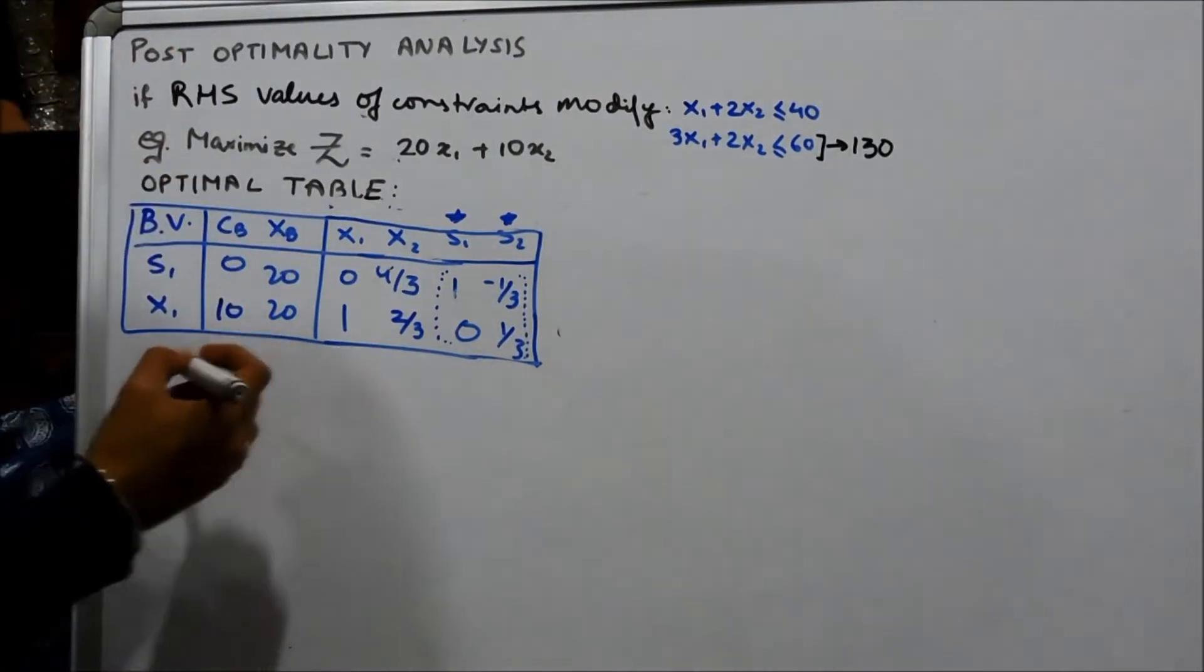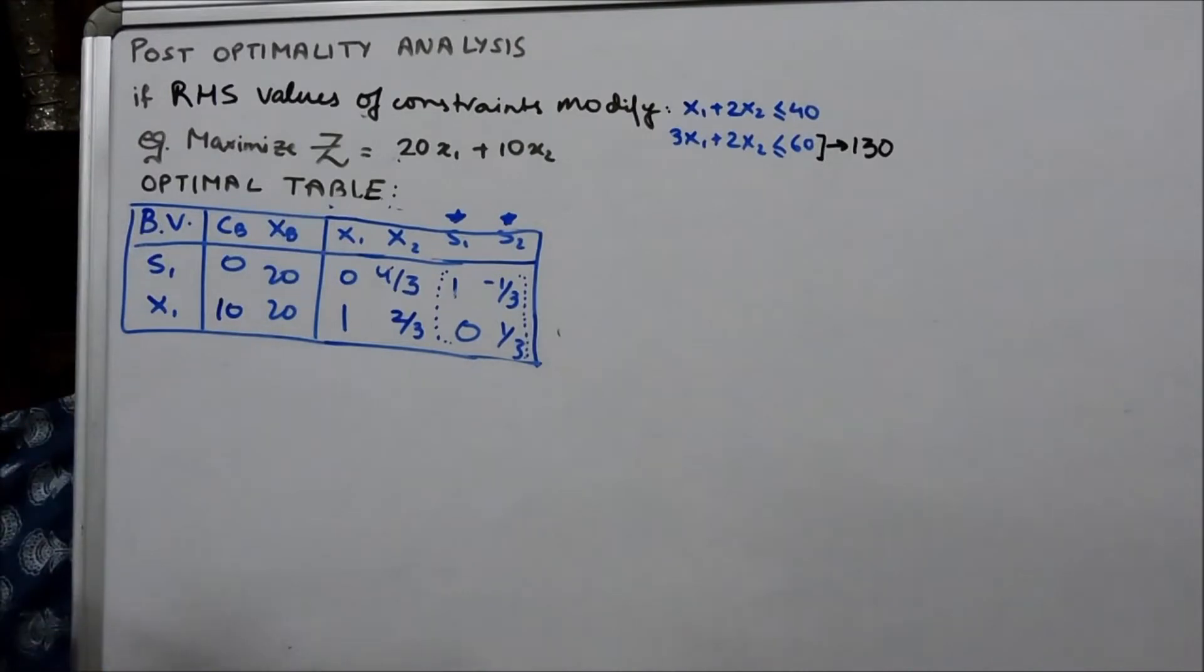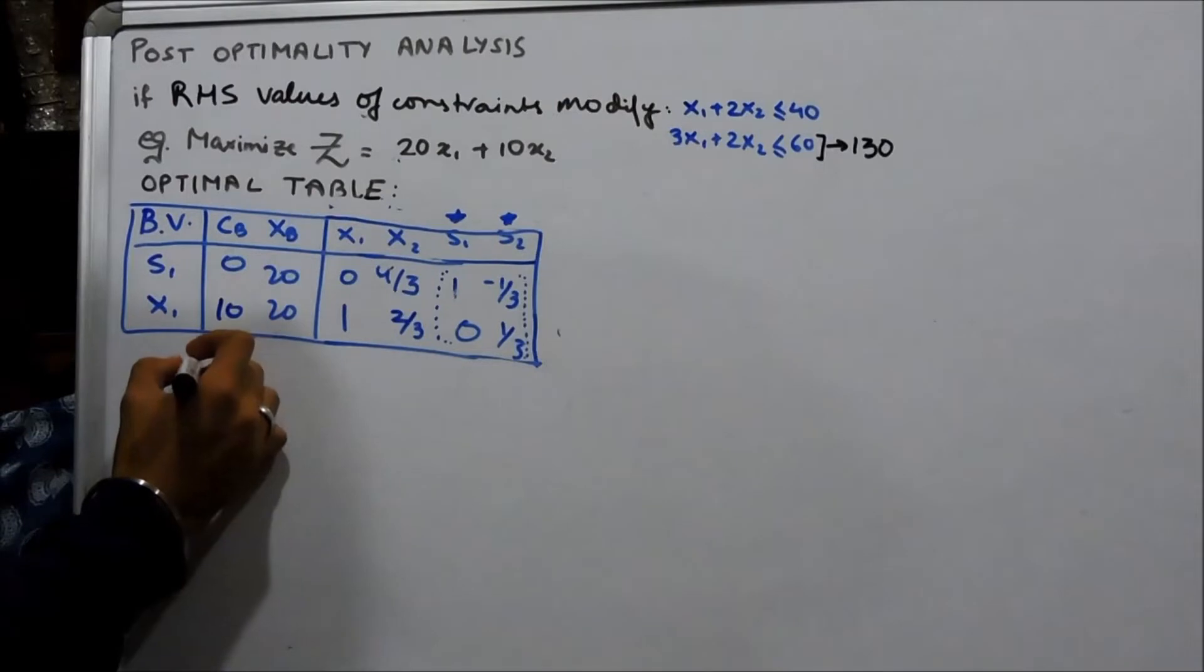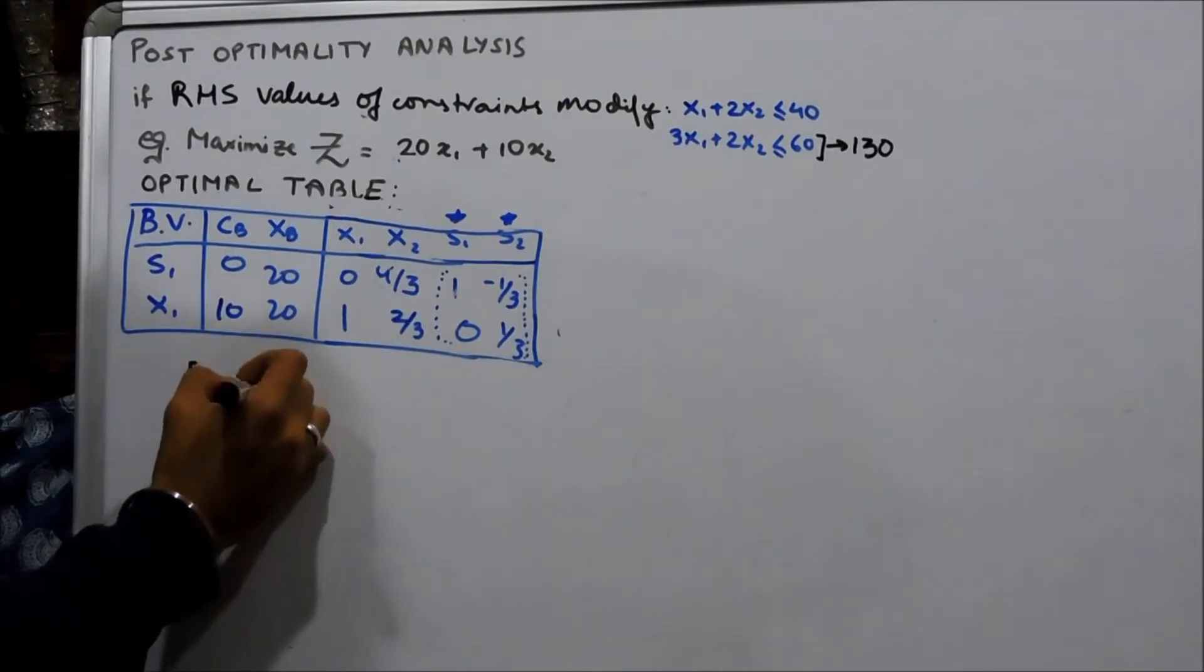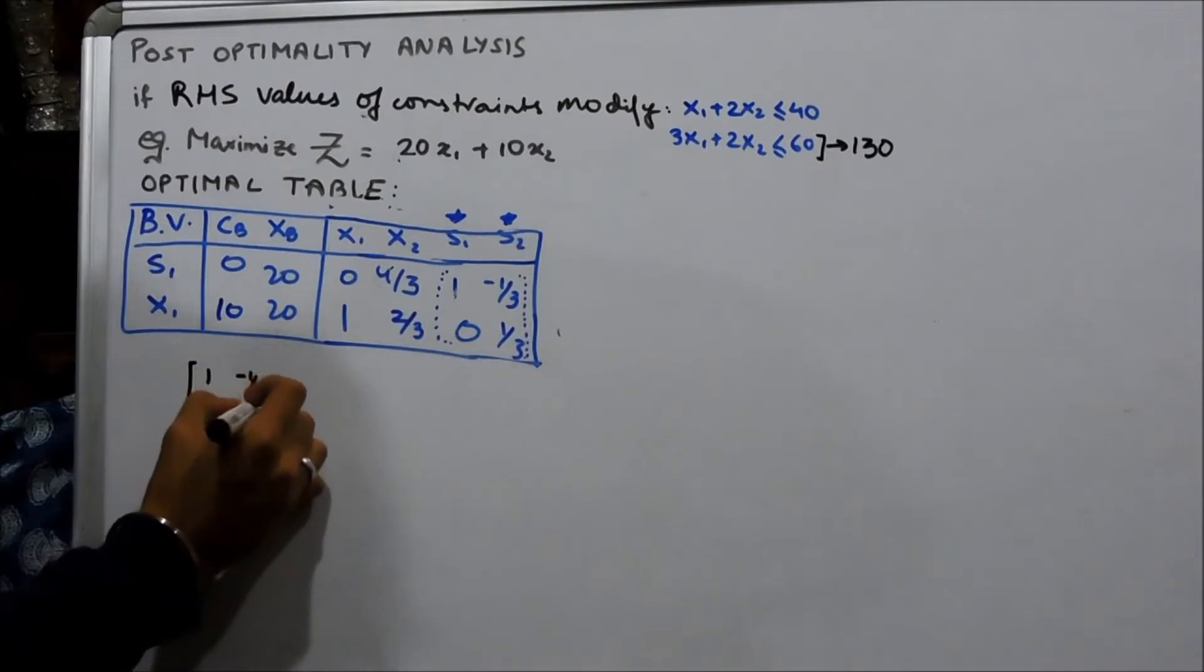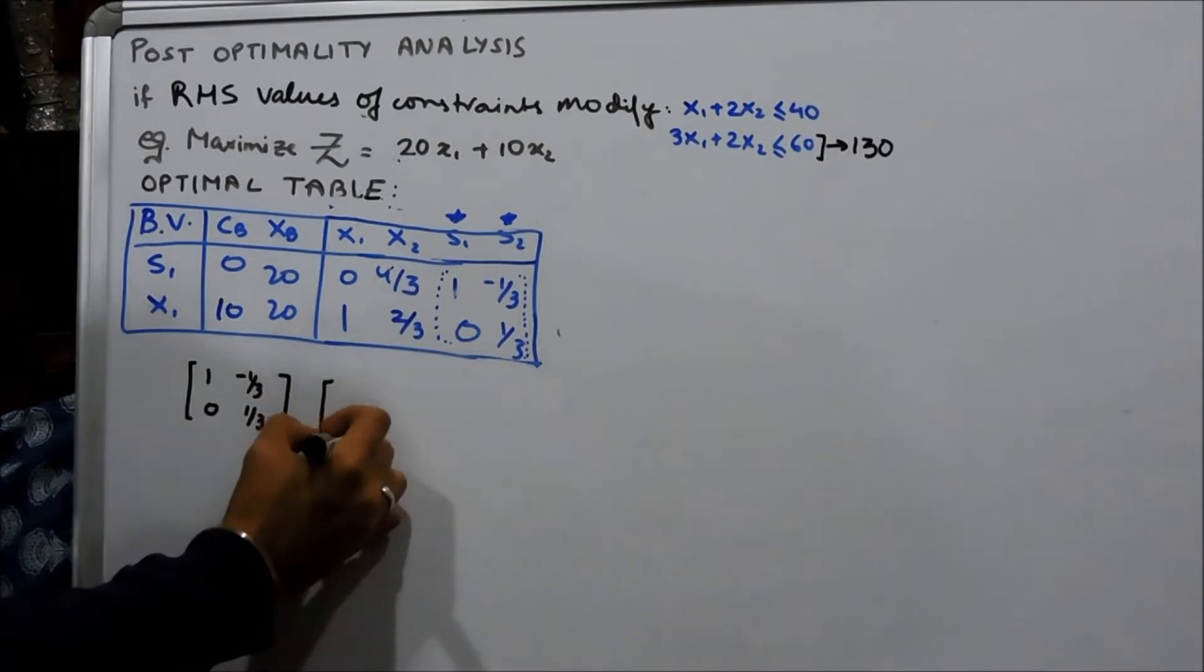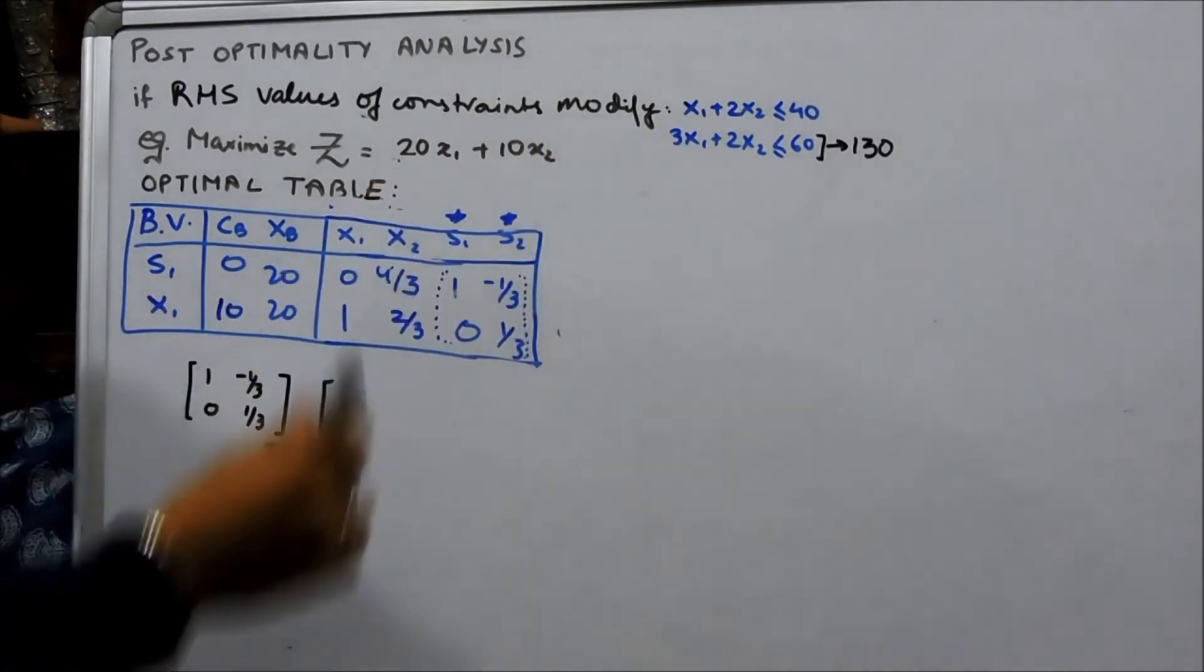Because we have the new constraints as 40 and 130, we write this as, we write 1, minus 1 by 3, 0, 1 by 3, the optimal inverse which is the 2 by 2 matrix and multiply that with the new constraints.